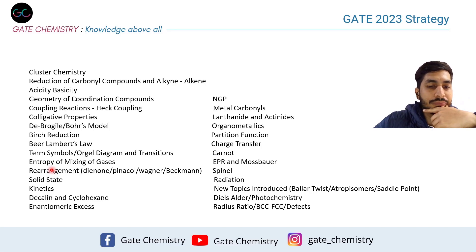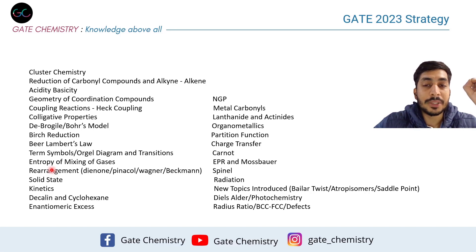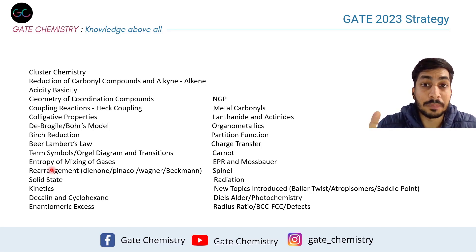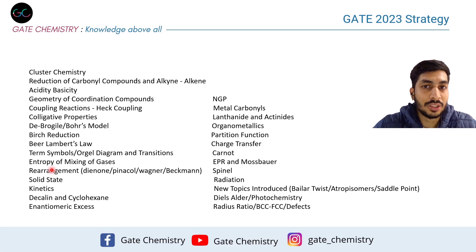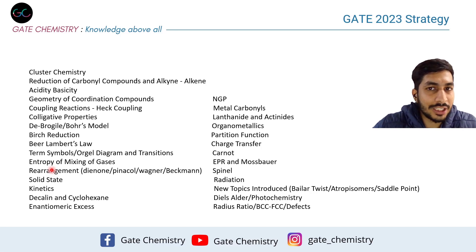In name reactions, rearrangement reactions are very important. You can cover those in Clayden — for example, Dienone, Pinacol-Pinacolone, Wagner-Meerwein, and Beckmann rearrangement. GATE gives special emphasis to rearrangement reactions because it's easier to frame multiple choice options from them. Make sure you have a very good grip on the commonly known rearrangement reactions found in Clayden's rearrangement chapter.